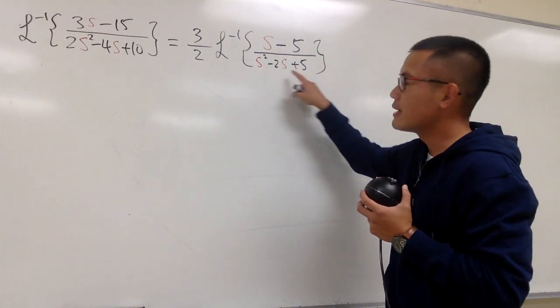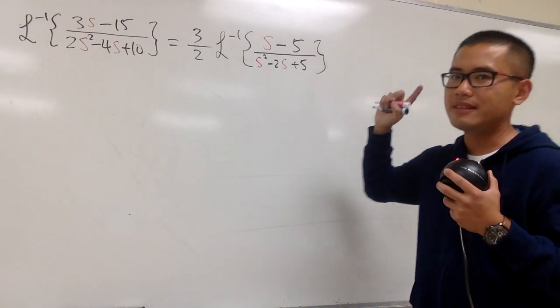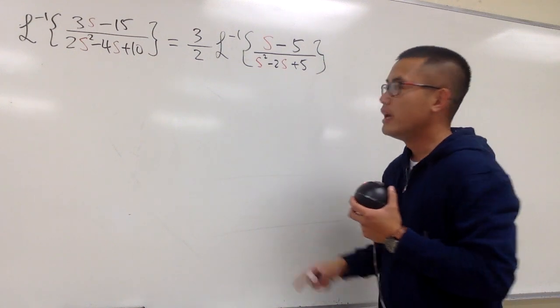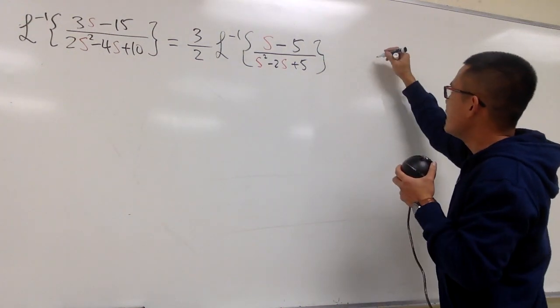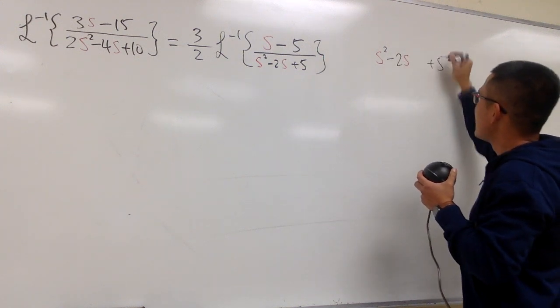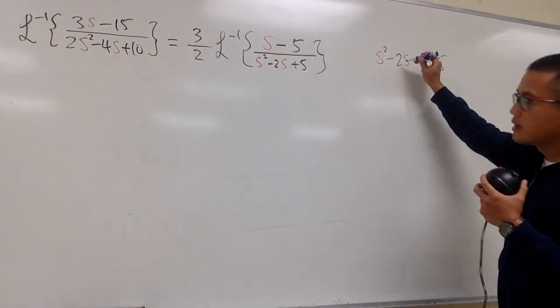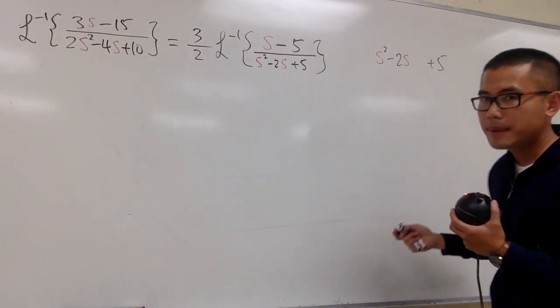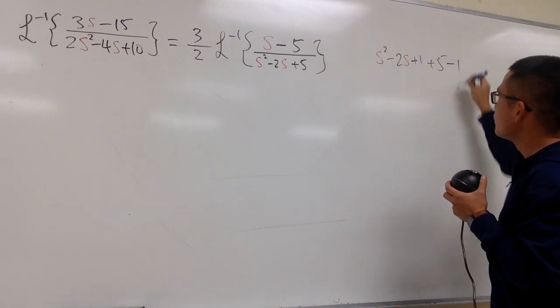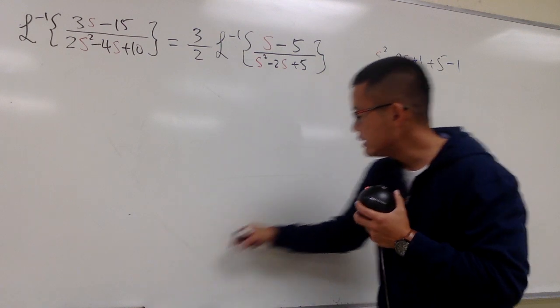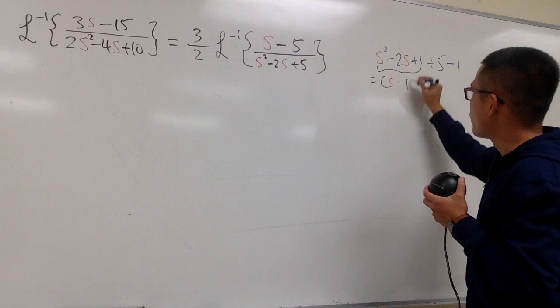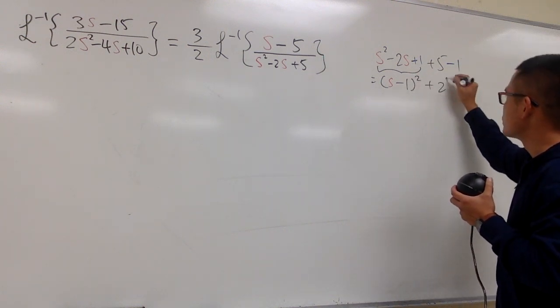Anyway, on the bottom here, once again, this is not factorable, and it does not have any real roots. So I will have to go ahead and complete the square. Let's do so right here on the side. We have s squared minus 2s, leave a space, and then plus 5. Well, look at this. This is minus 2. So divided by 2 is minus 1. Square that, minus 1 squared is plus 1. So add 1, and don't forget to minus 1 right away.